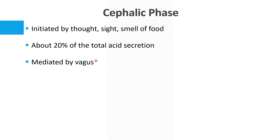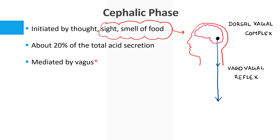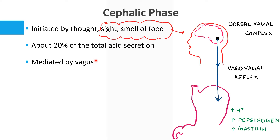Whenever we get the sight or smell of food, our dorsal vagal complex is activated. This in turn sends impulses via the vagus nerve, which stimulates the stomach to produce increased gastric secretion — that is increased H+, increased pepsinogen, as well as increased gastric acid. So the main reason for the cephalic phase is the vagus nerve, activated by the dorsal vagal complex.